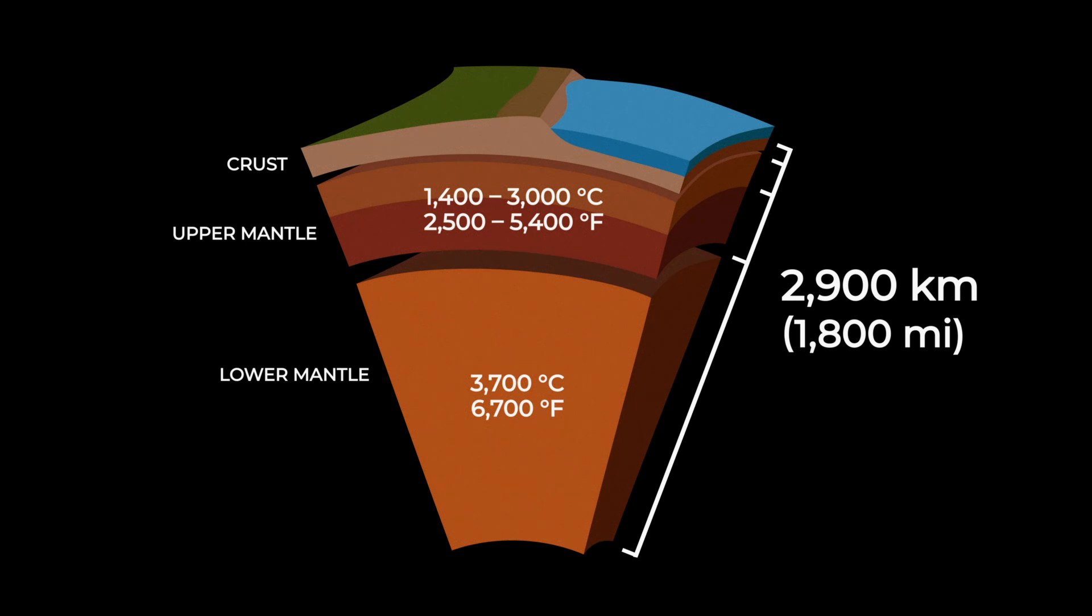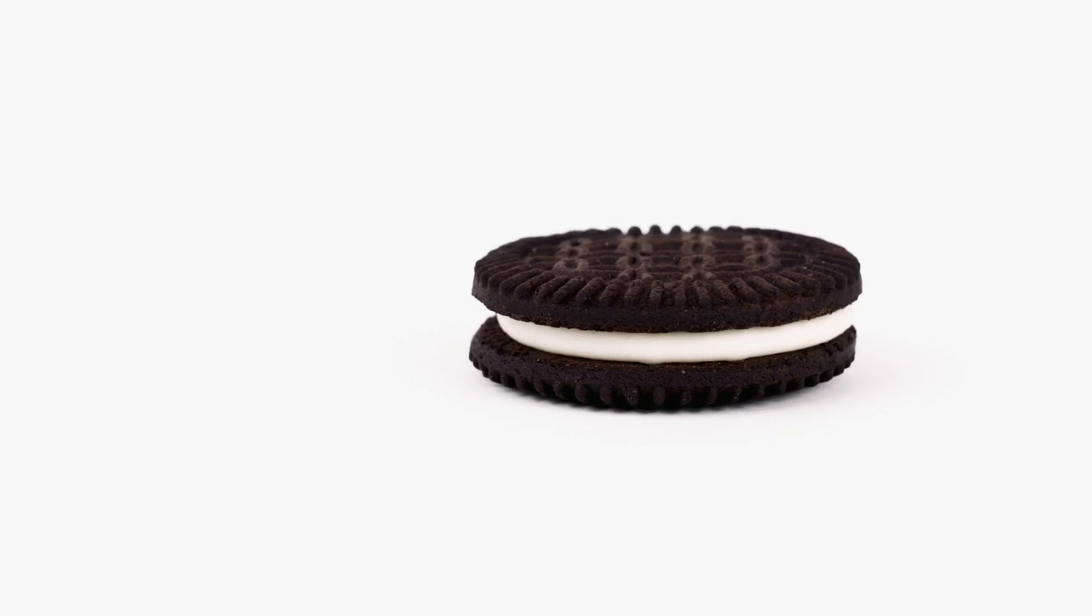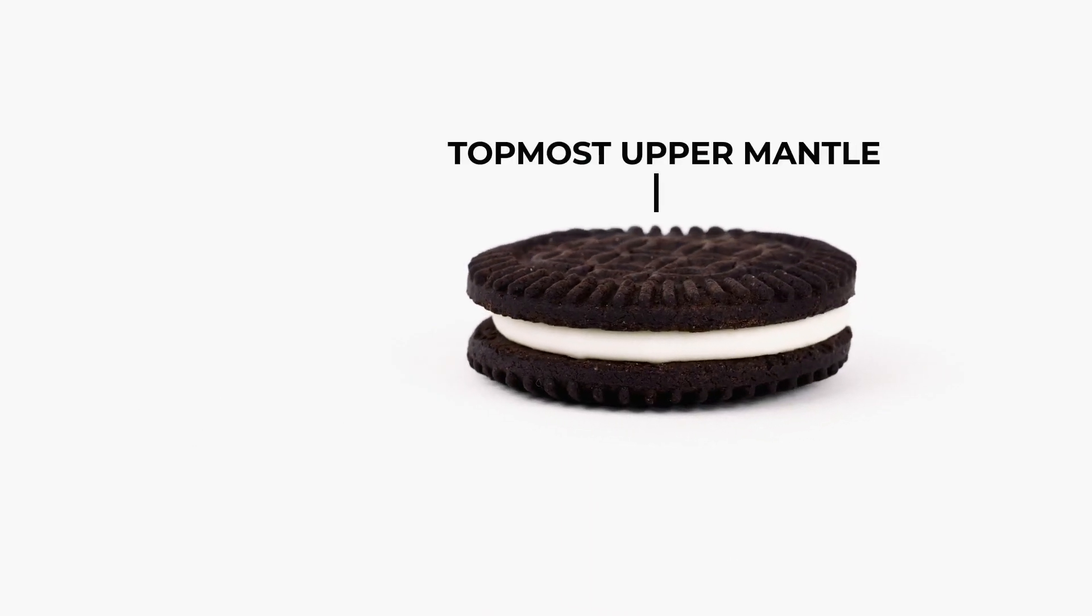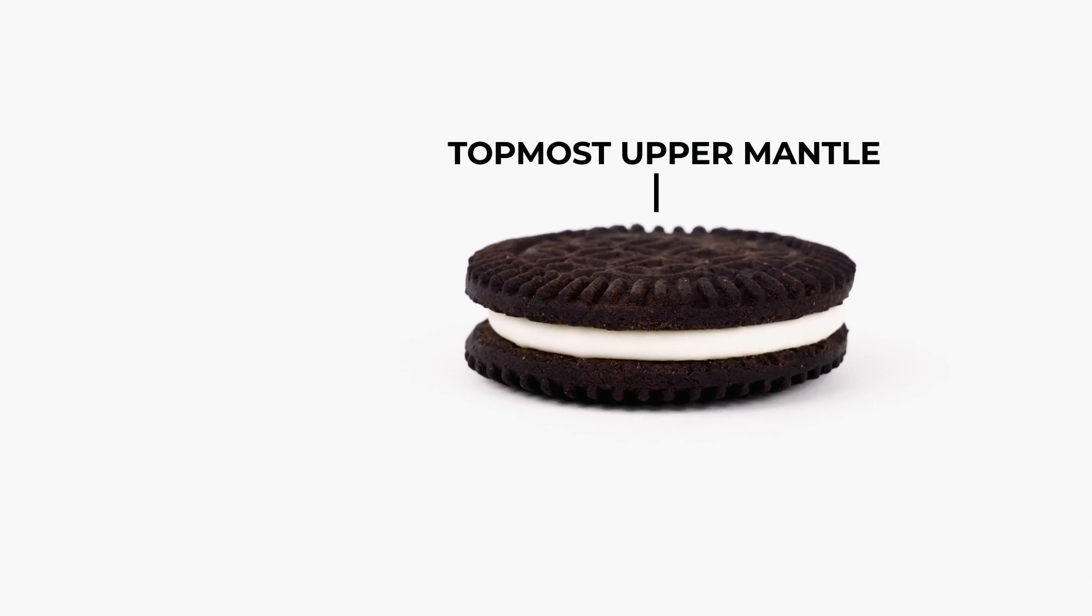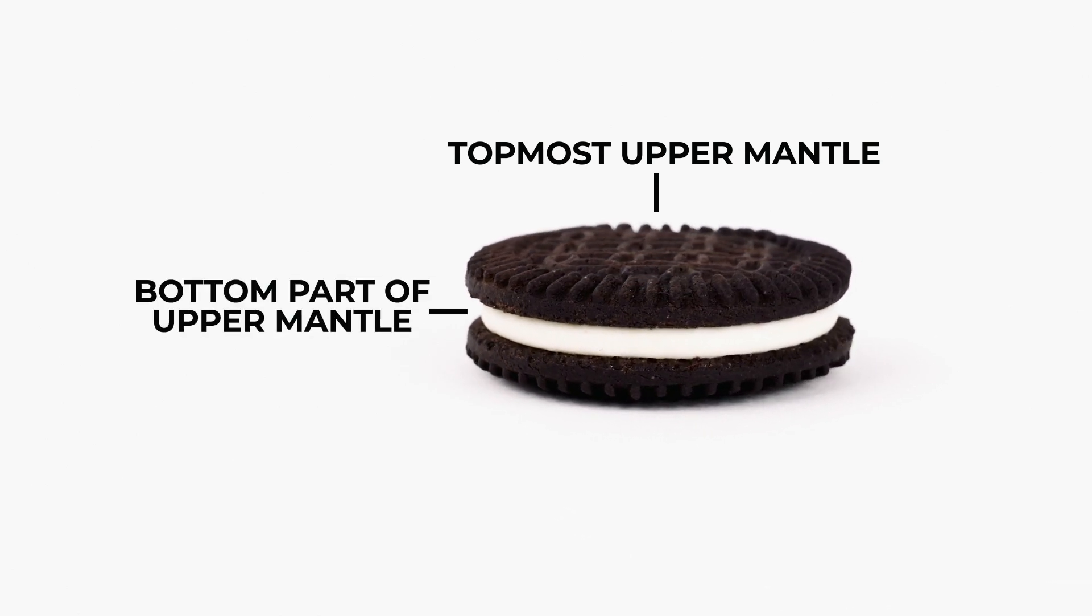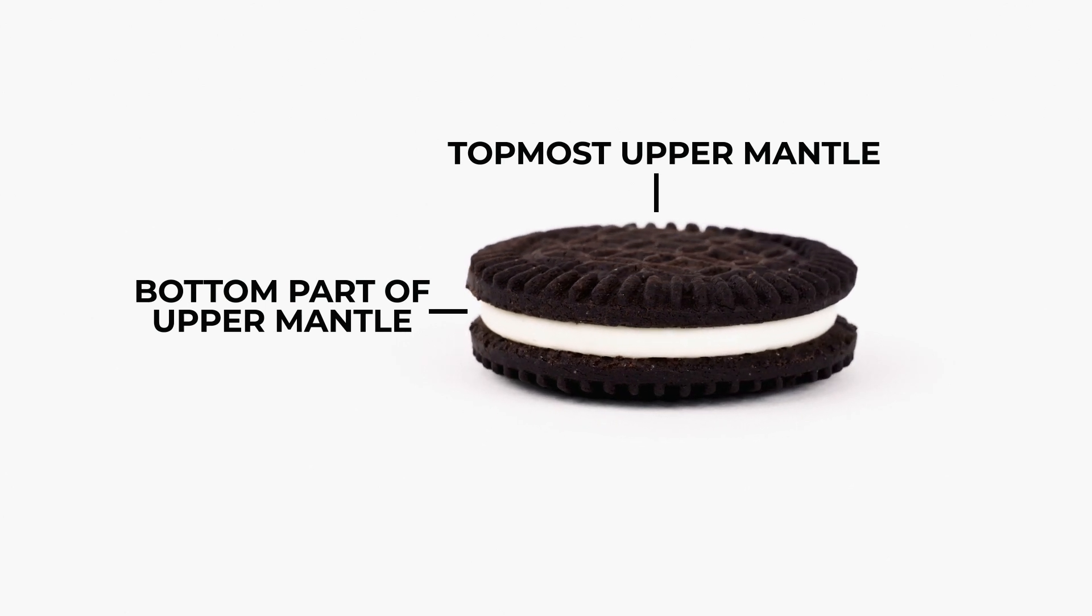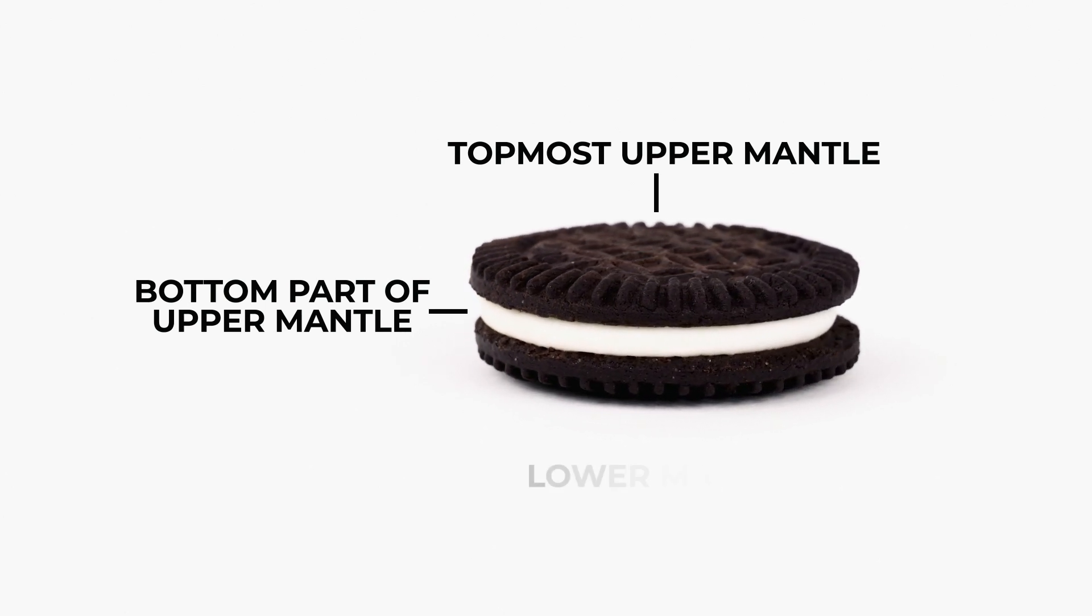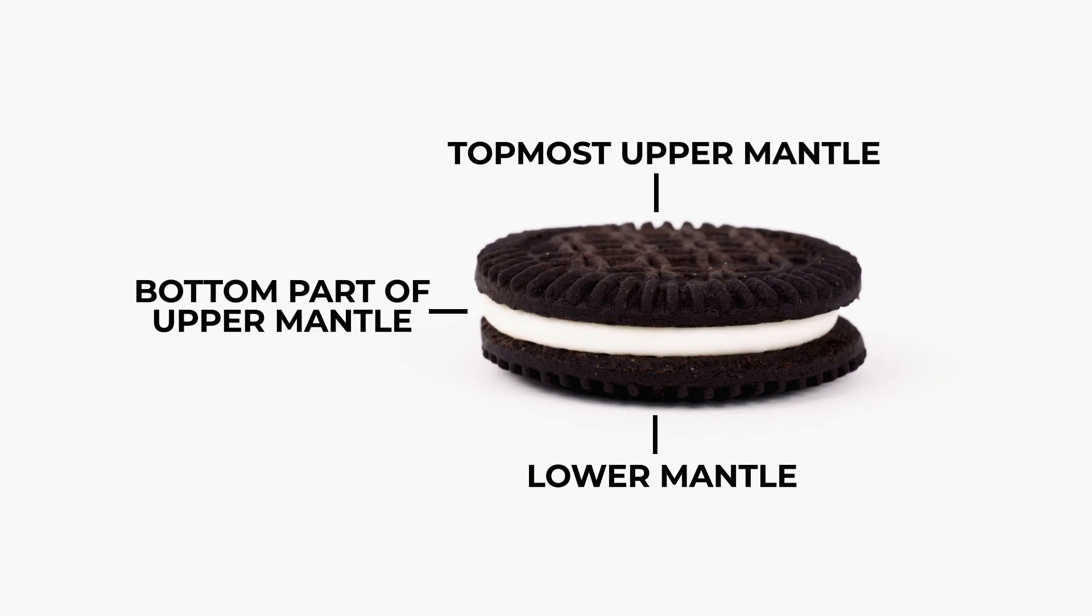You could think of the mantle as a sandwich cookie, where the top hard cookie is the topmost part of the upper mantle. The soft cream layer represents the soft, bendy rock found in the bottom part of the upper mantle. Finally, the bottom hard cookie is the lower mantle.